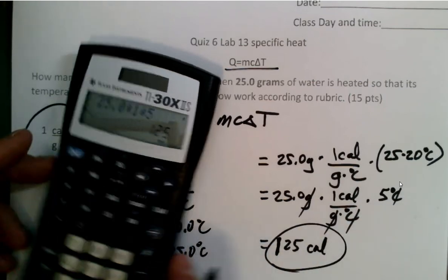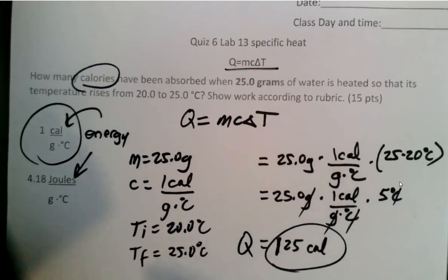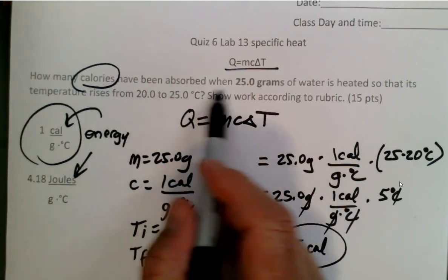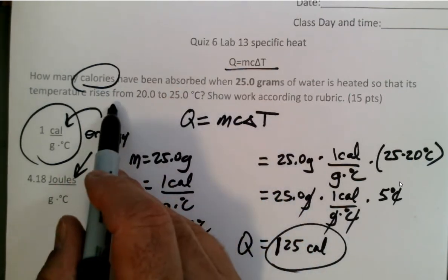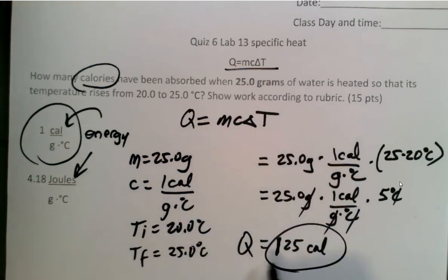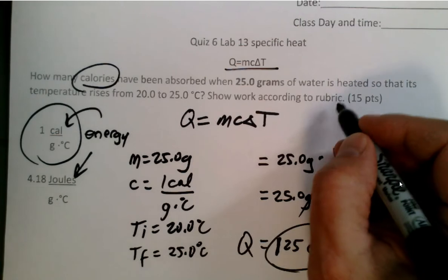And let's circle that. So we know that Q is equal to 125 calories. So how many calories were absorbed so that the temperature rises in this mass of water? 125 calories. These are little calories. These are not the same calories like in a candy bar. In a candy bar, those are kilocalories. So we can talk about the significance of that later.